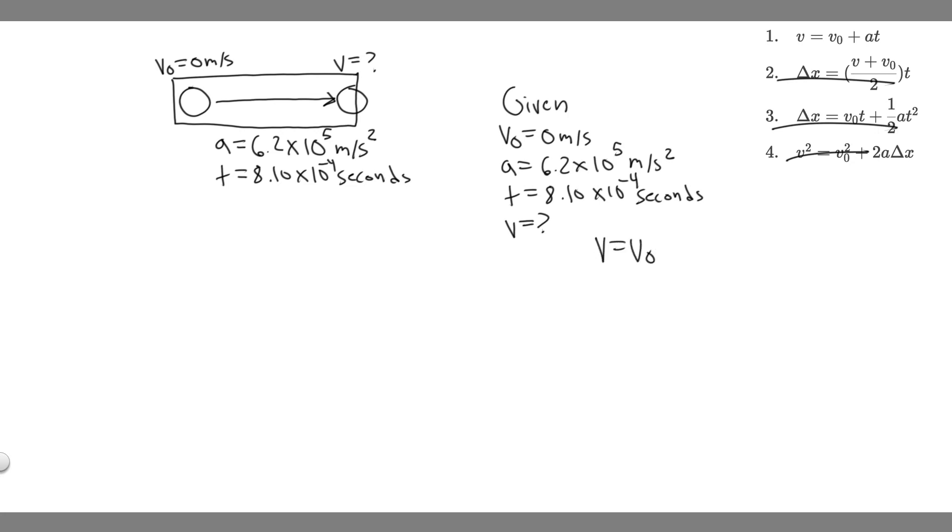If you look at equation 1, v equals v sub 0 plus a times t, notice what we're trying to do is find v. We have v sub 0, we have the acceleration, and we have the time. All we have to do is just plug in our numbers and we'll be able to solve.